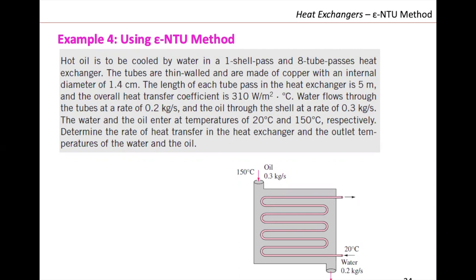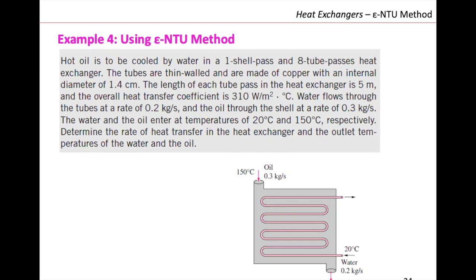Even if you just read this problem, you'll realize you need to use Epsilon-NTU. Why? Because you have two missing temperatures — the two outlets. If you don't want to use Epsilon-NTU, you might use an iterative LMTD method. But the easy way is to use Epsilon-NTU. You will know by the problem statement that Epsilon-NTU is the most reasonable choice. We know the mass flow rates and inlet temperatures, but we don't know the rate of heat transfer or the outlet temperatures — that's what the problem asks us to solve for.